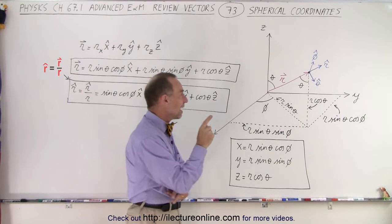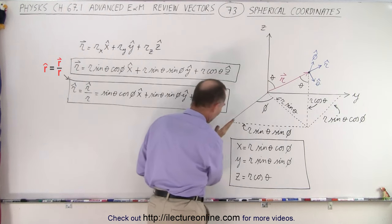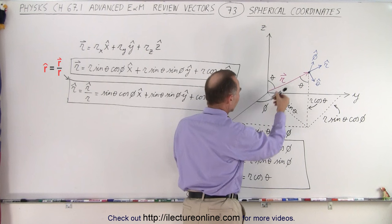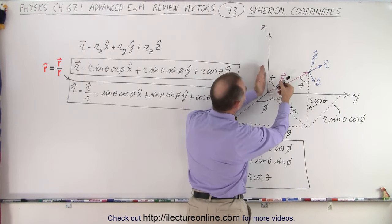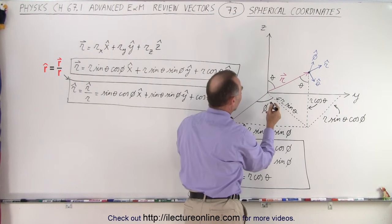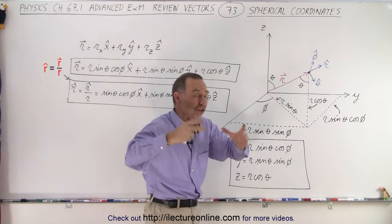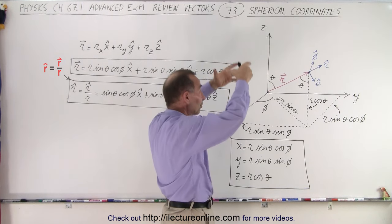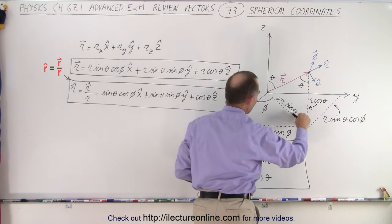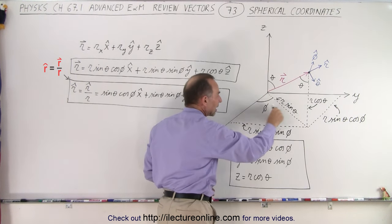We have three components. First, the length of the vector r. Second, the angle along the xy plane relative to the x-axis — we call that angle phi. Third, the angle from the z-axis to the vector r — that's called angle theta. The projection of vector r onto the xy plane is a dotted line, and the angle of that projected line relative to the x-axis is angle phi.